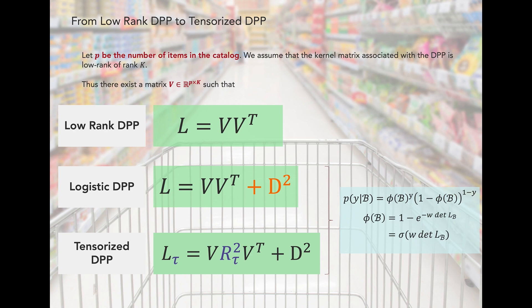The logistic component of the model moves us into a classification-based setting. And then our tensorized DPP generalizes the logistic DPP by learning a low-rank tensor for each item to recommend. We use a low-rank tensor to reduce the number of model parameters.